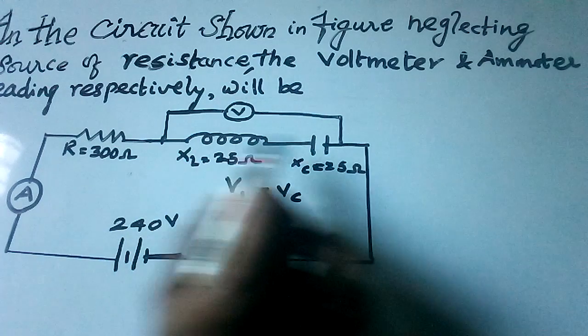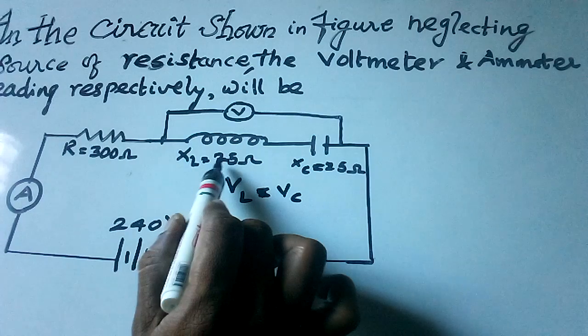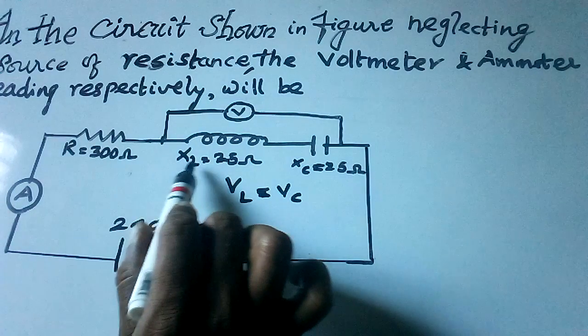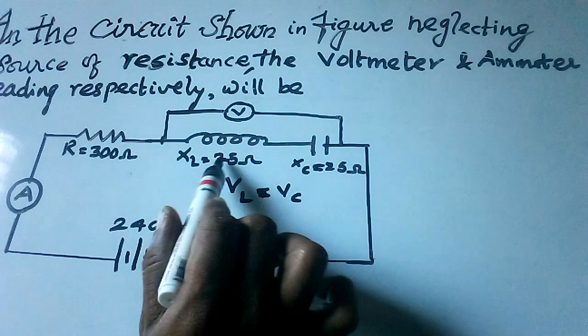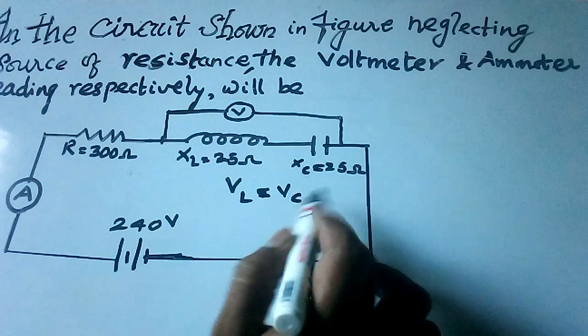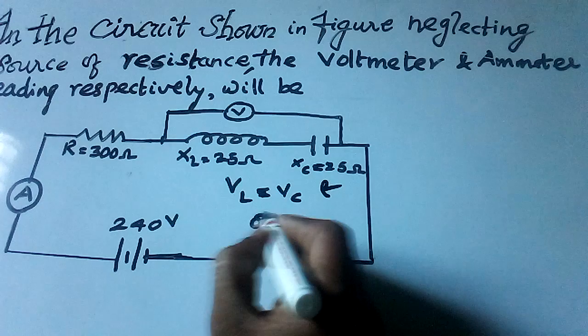resistance values or inductance values. Inductance is equal to 25 ohm, as well as capacitance is also equal to 25 ohm, so both are equal and opposite.